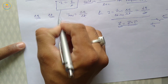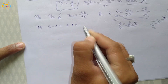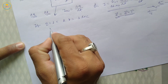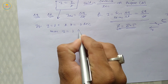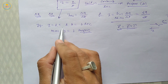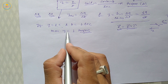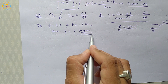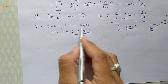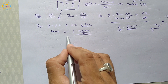Definition of 1 ampere: from the formula I = Q/T, if Q equals 1 coulomb and T equals 1 second, then I equals 1 ampere. So when 1 coulomb of charge flows in a conductor in 1 second, the current flowing in the conductor is 1 ampere.